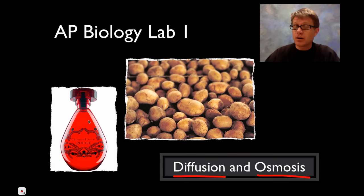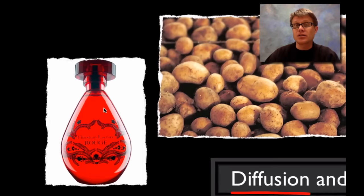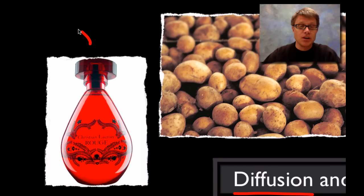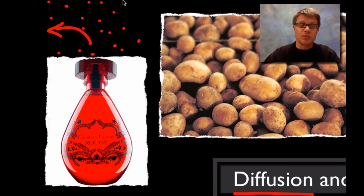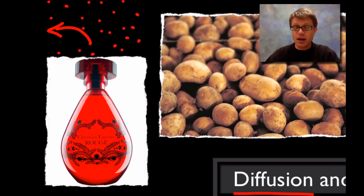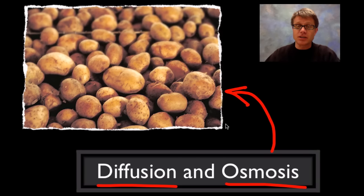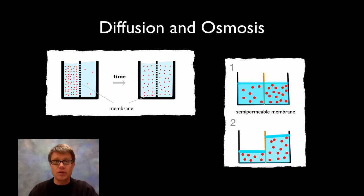Diffusion is the movement of molecules from an area of high concentration to low concentration. If I were to remove the lid on top of this perfume, the perfume molecules would move from high concentration inside the bottle to low concentration in the air, and pretty soon you'd be able to smell it just due to diffusion. Osmosis is a specific type of diffusion — it's the movement of water — and we'll study that using potatoes and sugar water.